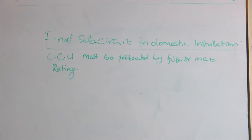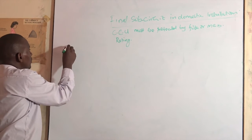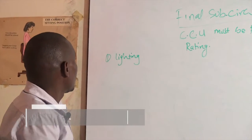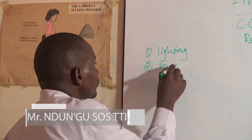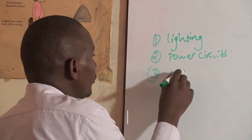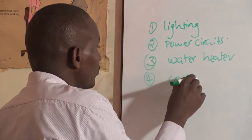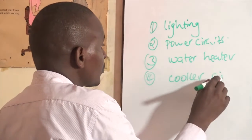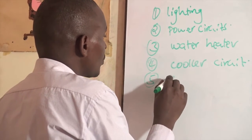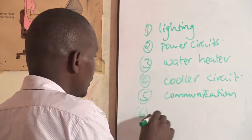In a domestic installation, basically we have five final sub-circuits and we can list them here. One, we have lighting. Two, we have power. Three, we have water heater. Four, we have cooker. Five, we have communication circuit. And six, we have motor circuits.